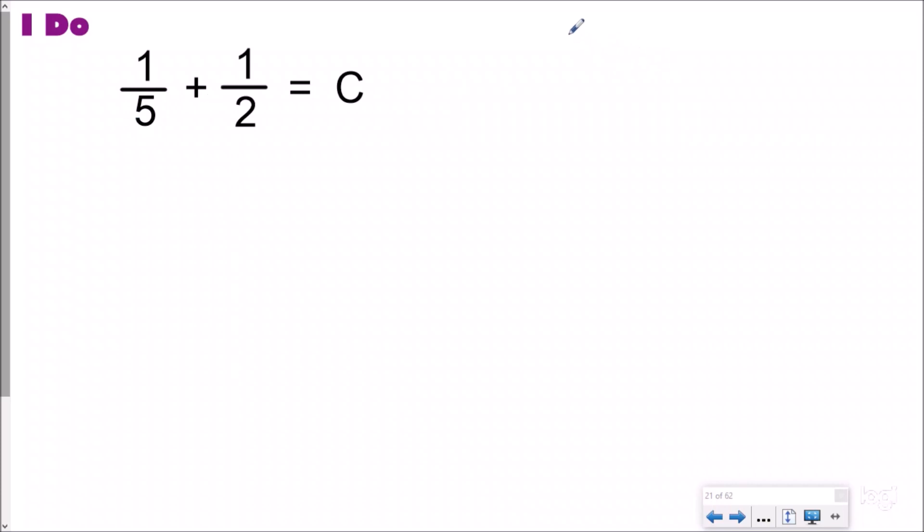So I'm going to use my pattern method over here to make a list of equivalent fractions, for both of these fractions. Now I know that two will not turn into five because Dr. Bones is very smart.